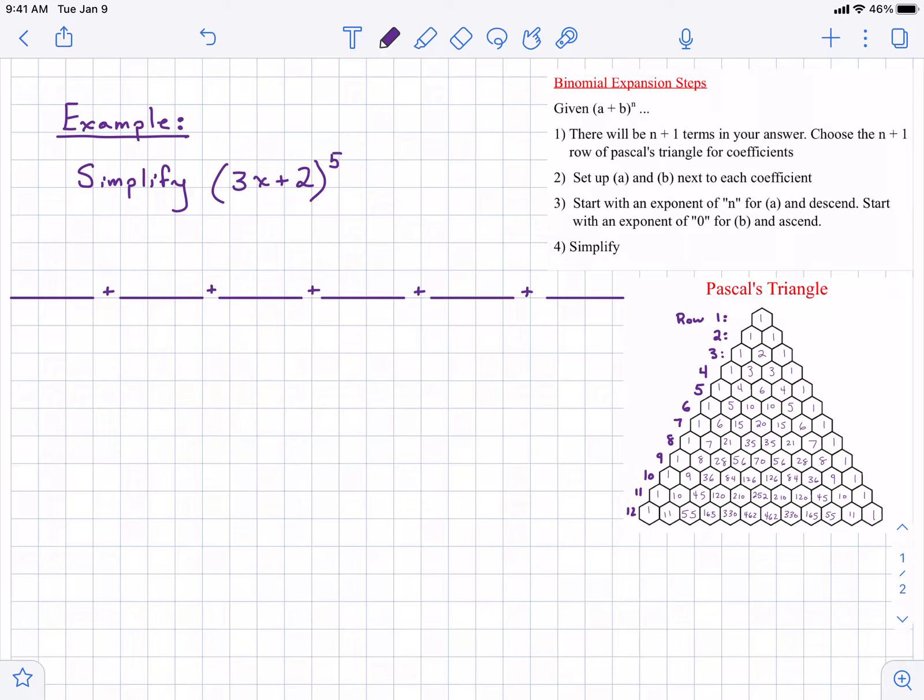However, that becomes trivial when we increase the exponent past something like 2 or 3. We don't want to be completing box method over and over again, multiplying polynomials. It gets very messy, it's a lot of work, and it gets kind of redundant.